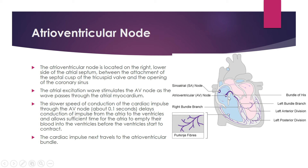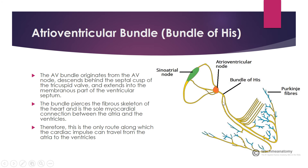The cardiac impulse next travels from the AV node to the AV bundle, also called the bundle of His. There are three internodal pathways leading into the AV node. From the AV node, the impulse is transmitted to the AV bundle or bundle of His. This AV bundle originates from the AV node and descends behind the septal cusp of the tricuspid valve.